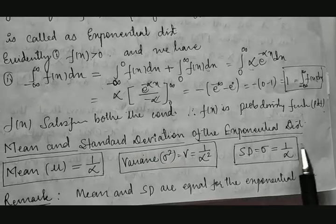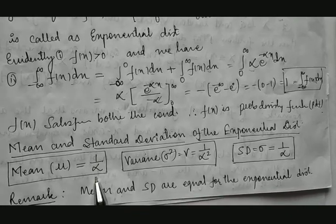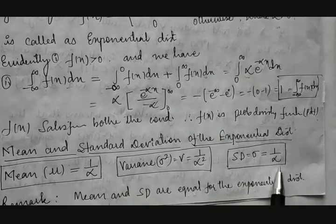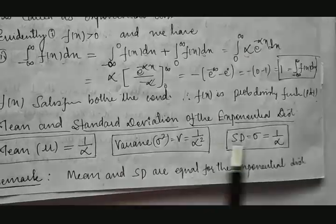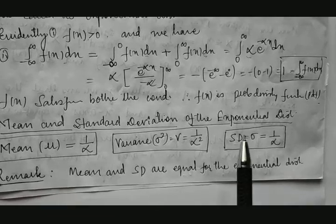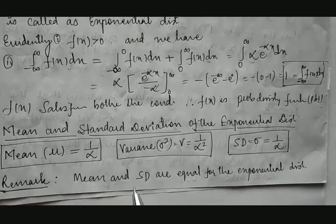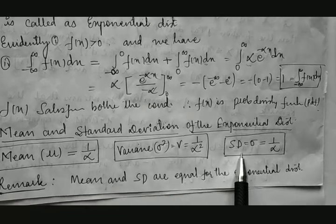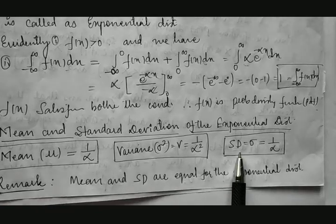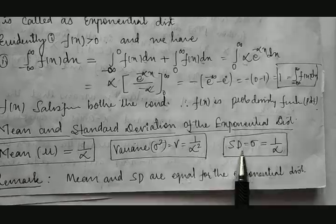The mean and standard deviation of exponential distributions are: mean μ = 1/α, variance σ² = 1/α², and standard deviation σ = 1/α. Very clearly, mean is also 1/α and standard deviation is also 1/α. Therefore mean and standard deviation in exponential distributions are equal — they are the same. Whatever mean you get, that itself is the standard deviation.